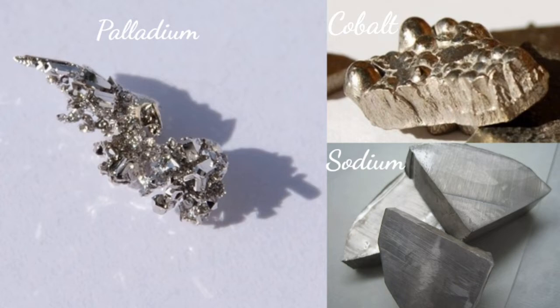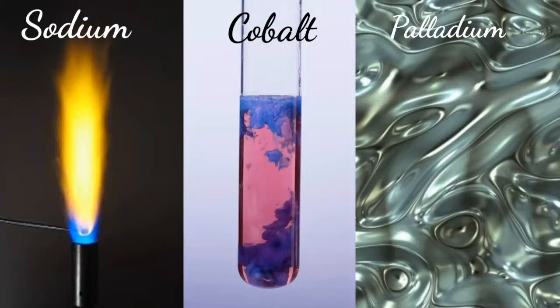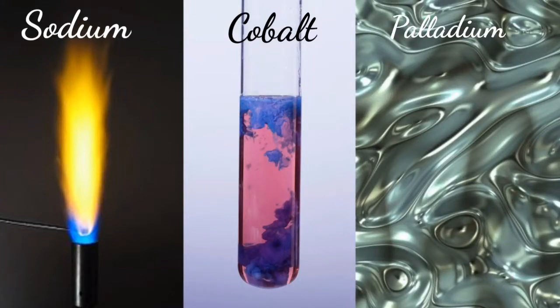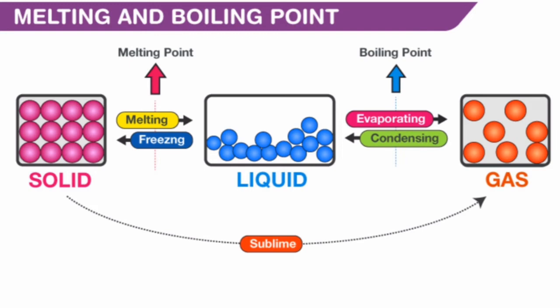However, if we put the sodium, palladium, and cobalt in a furnace at 1600 degrees Celsius, by the time the palladium and cobalt became liquidous, the sodium will have already transformed into a gaseous state. This is because different elements have unique boiling and melting points.